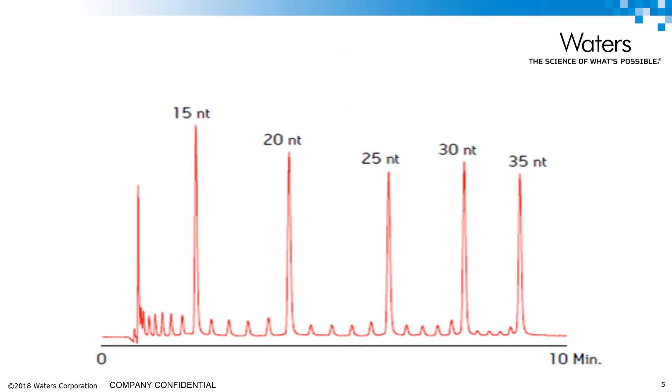And this is what the UPLC chromatogram of oligonucleotides looks like. This is actually a standard of oligonucleotides between 15 and 35 bases long. Usually it'll take about 10 minutes to get a result like this, and this is great because the COVID-19 primers are typically 19 to 26 bases long.